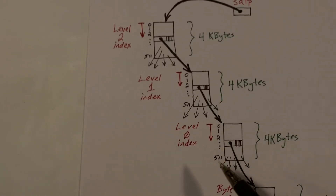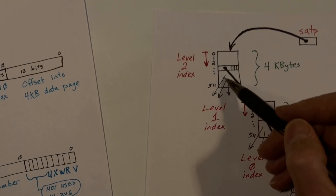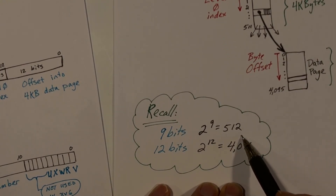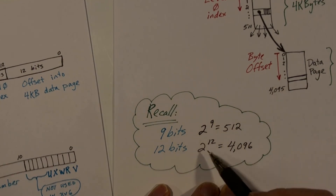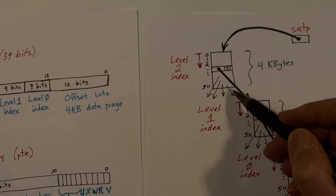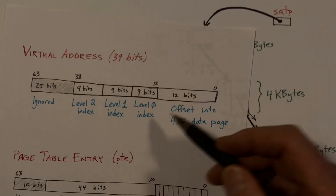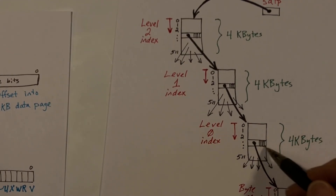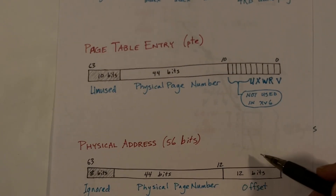The hardware looks at the first 9-bit field — the level-2 index — and uses it as an index into the root node. Recall that 2 to the 9th is 512, so 9 bits is exactly what we need. We get a pointer, then use the level-1 index to index into that next page, getting a pointer to the next page. We use the level-0 index to access into that page, which gives us the final page table entry used to check the access permissions of the data page and to build the physical address.